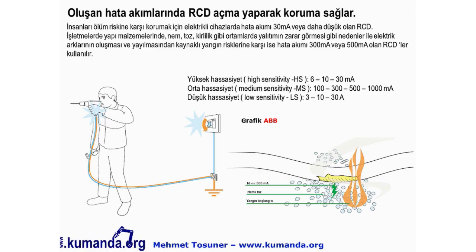İnsanları ölüm riskine karşı korumak için hata akımı 30 mA veya daha düşük olan RCD'ler kullanılır. Yangın risklerine karşı ise 300 mA veya 500 mA'lık RCD'ler kullanılır. Hassasiyet sınıflarına göre: yüksek hassasiyet için 6, 10, 30 mA; orta hassasiyet için 100, 300, 500, 1000 mA; düşük hassasiyet için 3, 10, 30 A'lık RCD'ler ayrılabilir.